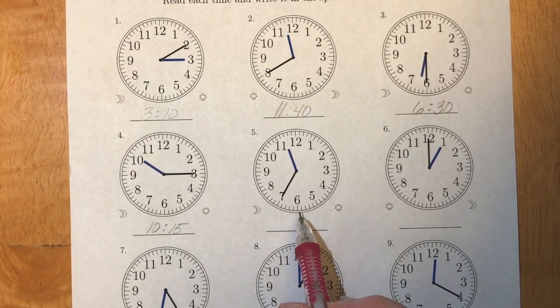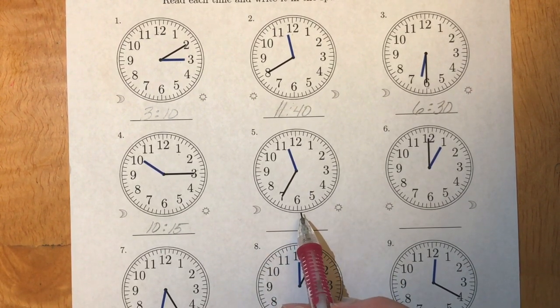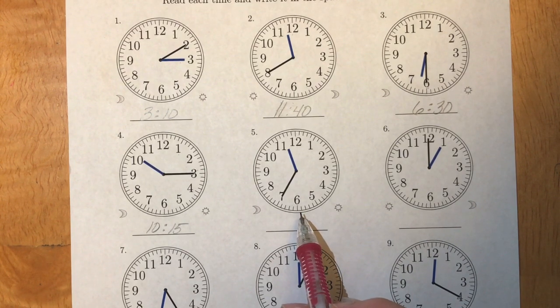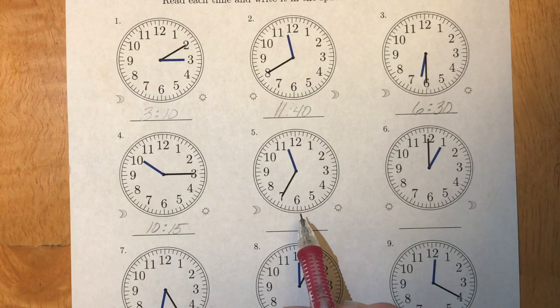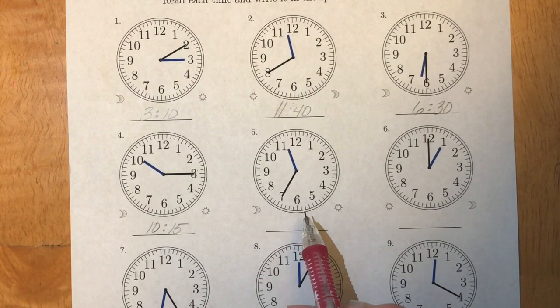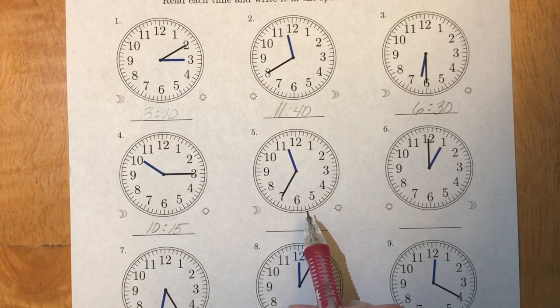Take a look at clock number five. I want you to try to figure out what time clock number five says. You can pause the video here to give you a chance to try to figure out the answer. And when you have it, push play again.